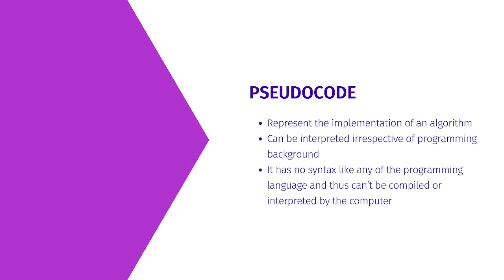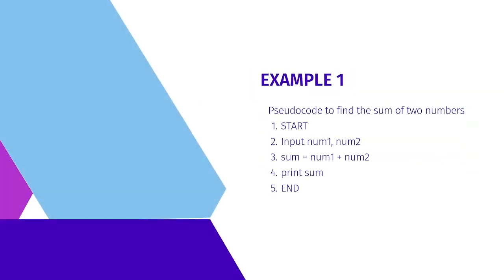Now that we've talked about flowcharts and algorithms, let's talk about pseudocode. What is pseudocode? It is used to represent the implementation of an algorithm and can be interpreted irrespective of programming background. It has no syntax like any programming language and thus cannot be compiled or interpreted by the computer. As an example, for the sum of two numbers, the pseudocode would be: Start, input num1 and num2, sum = num1 + num2, print sum, end.